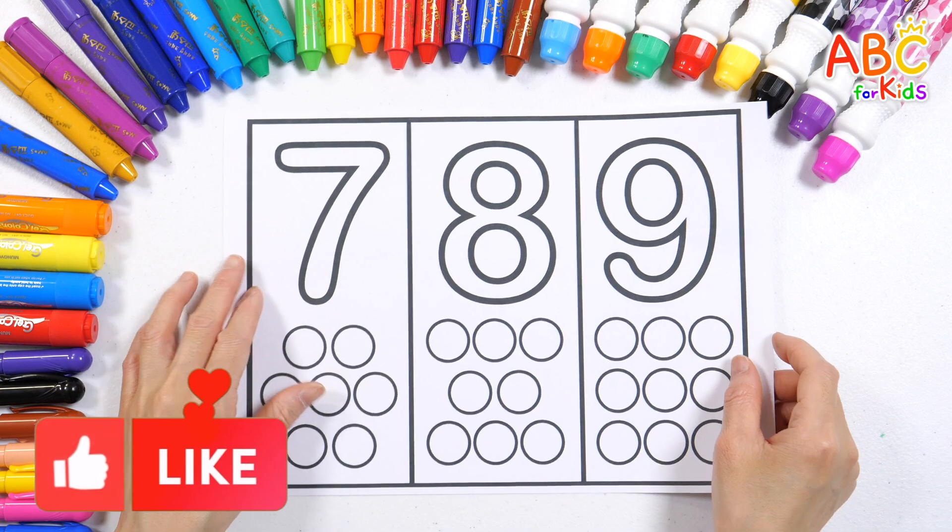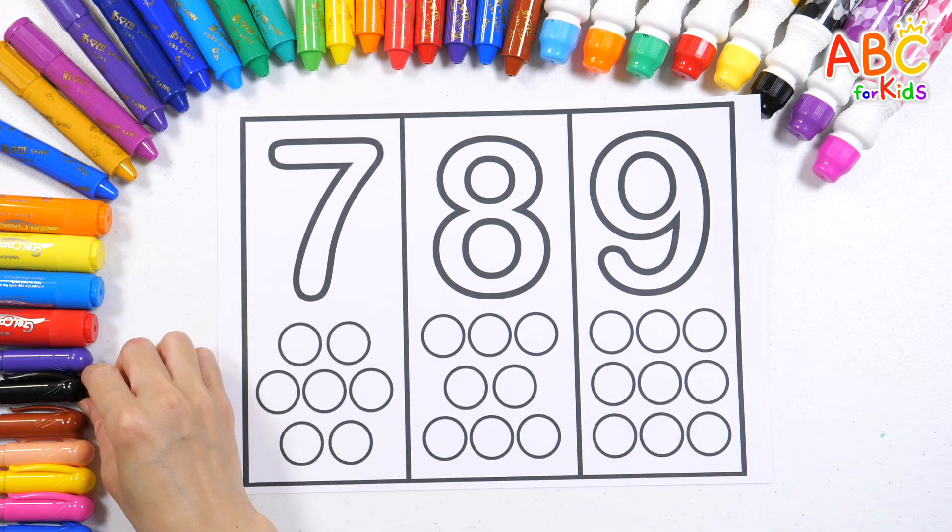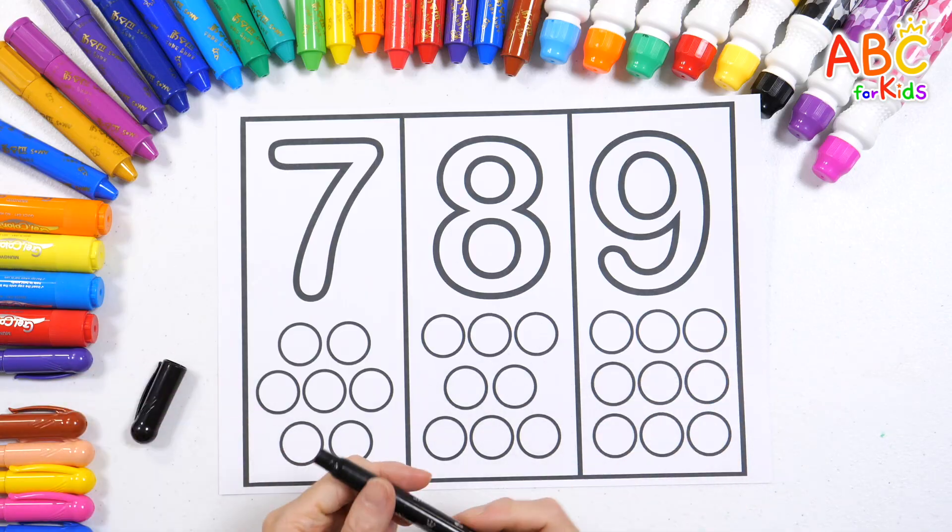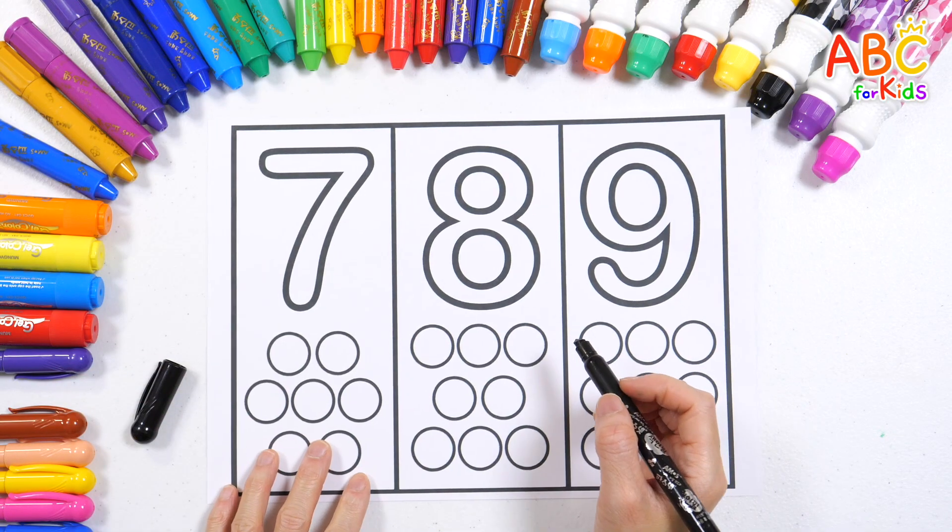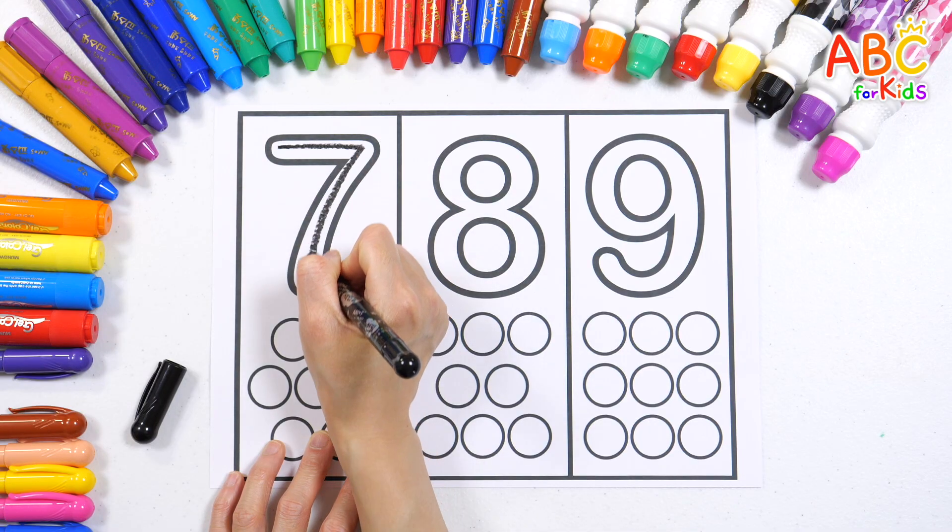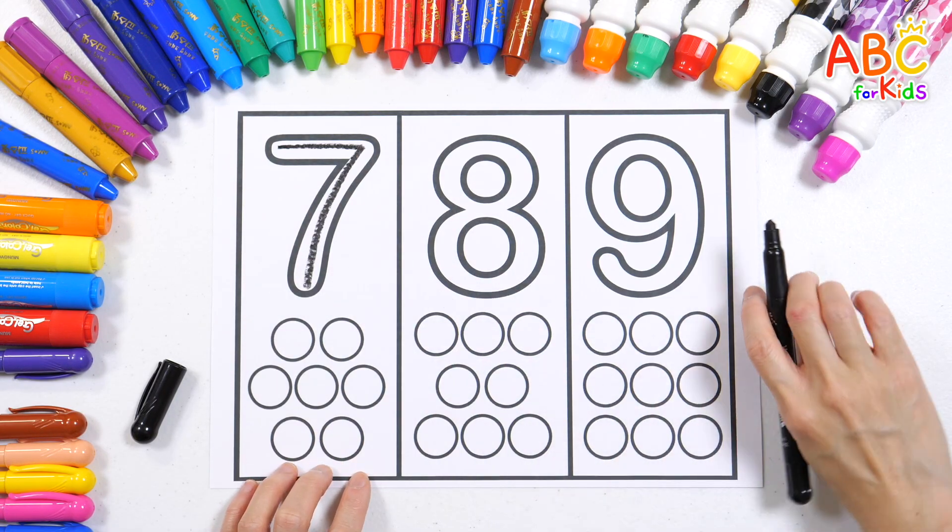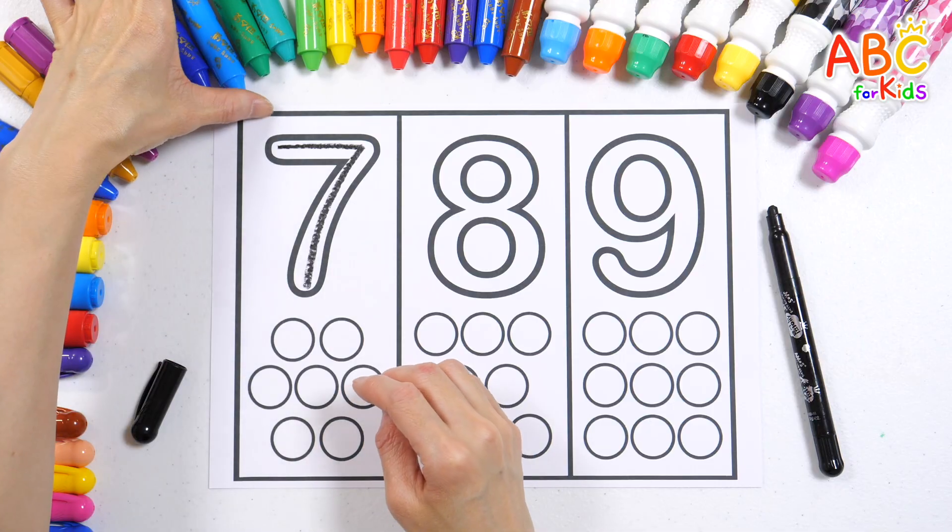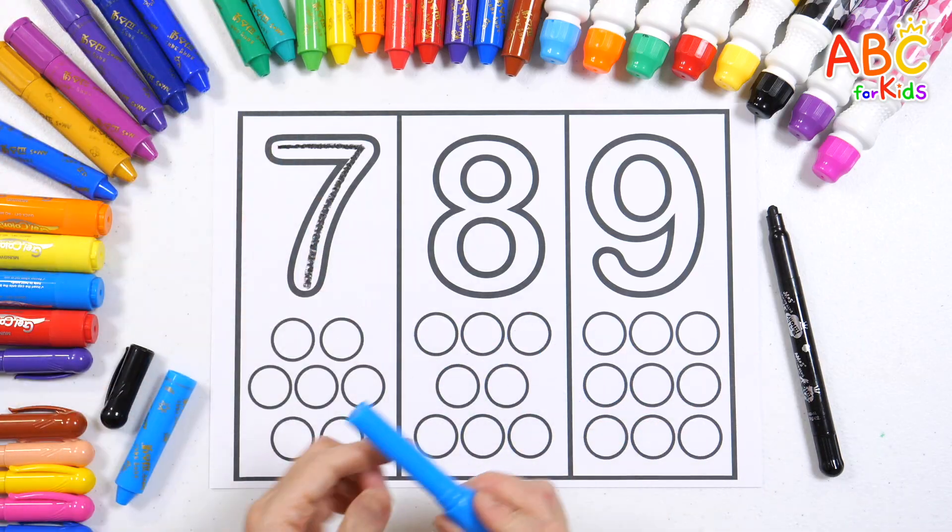Learn how to count by writing numbers and coloring circles. U is for UFO beaming light. Seven. Let's color the circles with a blue crayon and count them.